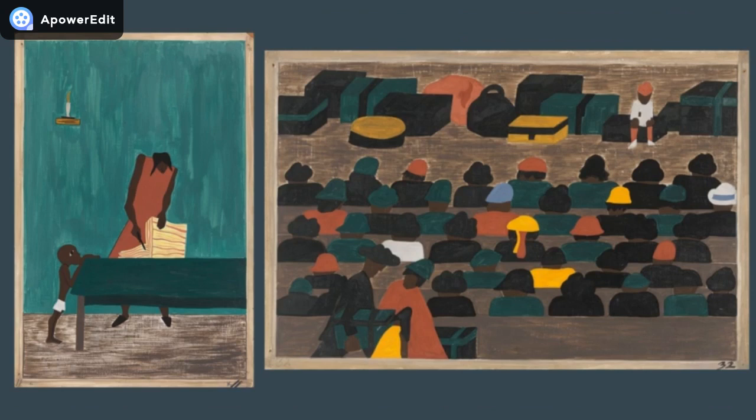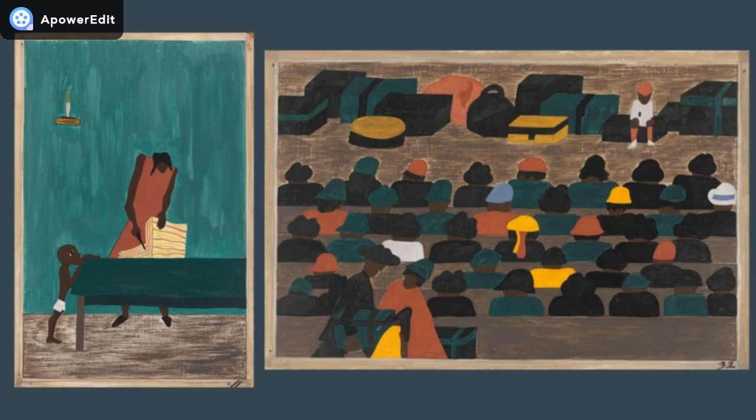Lawrence employs carefully thought-out composition to evoke many emotions in the viewer. In the painting on the left, the mother and child are placed in the middle of the room and made relatively small compared to the vast and open space that surrounds them. The wall's color choice of teal causes the wall to appear even larger and airier when contrasted with the brown and dark floor below them. In this way, the piece shows the feelings of weakness felt by African Americans during the migration and the poor economic status that they experienced.